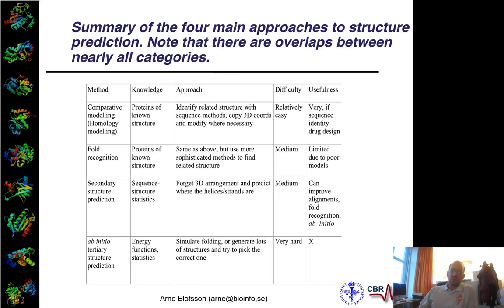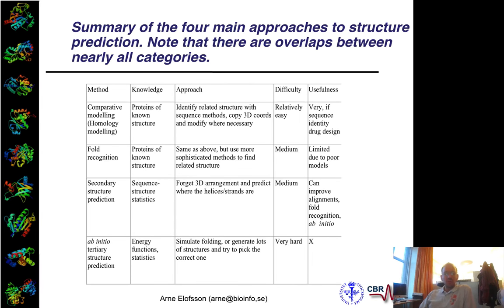For historical reasons, when you talk about structure prediction, you have often talked about four different categories. By the last 20 years, they are not always that easy to distinguish from each other, so they kind of overlap sometimes. But they are good to have as historical reference points.